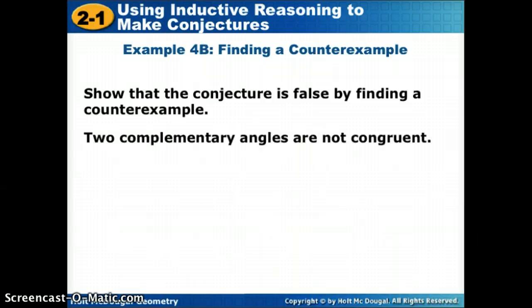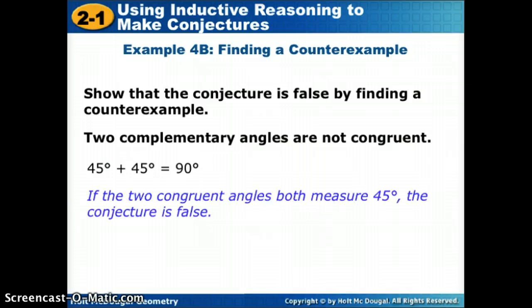So let's try another one. Here's another conjecture. Let's prove it false by finding a counterexample. Two complementary angles are not congruent. Okay, two complementary angles don't have to be congruent. I could choose 50 degrees and 40 degrees. Those are complementary, and they're not the same. But can I find a counterexample? Are there complementary angles that are congruent? Well, if I split 90 degrees in 2, 45 and 45, those are two angles that are complementary, and they are congruent. So if the two congruent angles both measure 45, then that conjecture would be false.